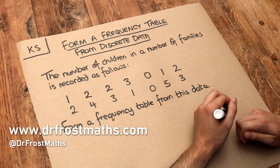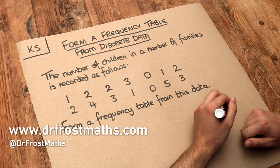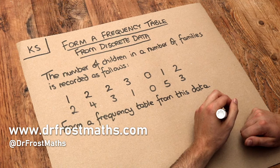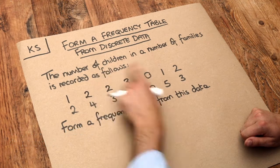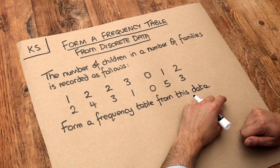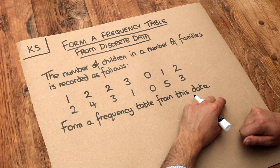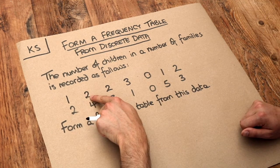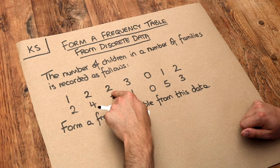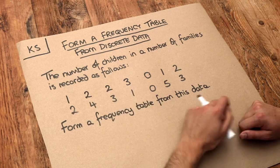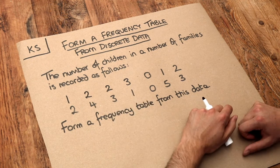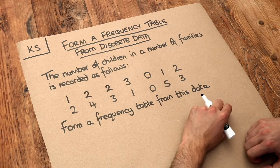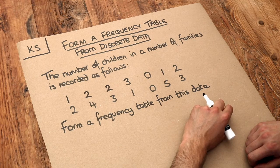Hello and welcome to this Dr. Ross Mass's key skill video on forming a frequency table from discrete data. So we've got this question here: the number of children in a number of families is recorded as follows. The first family has one child, the second family has two children, the next family has two children, the next family has three, etc. And we want to form a frequency table from this data.